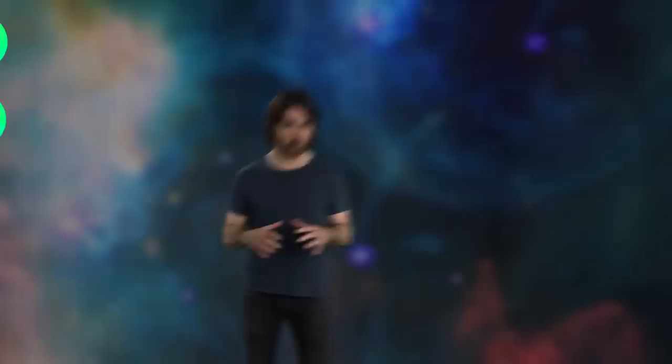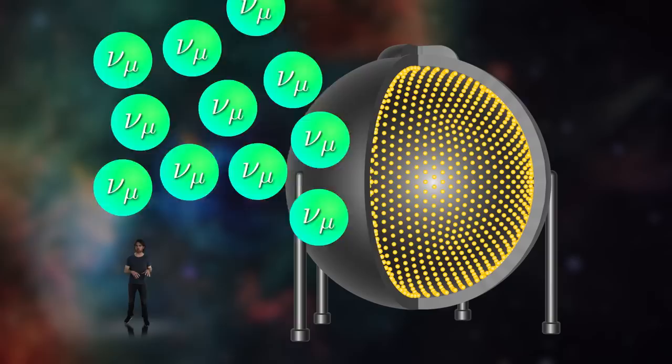So I told you that neutrinos oscillate between type, electron muon tau. So the Miniboon experiment starts with muon neutrinos, and some of these transform into electron neutrinos by the time they hit the vat. According to the standard model, that oscillation should be extremely rare over the very tiny distance of the neutrino beam.